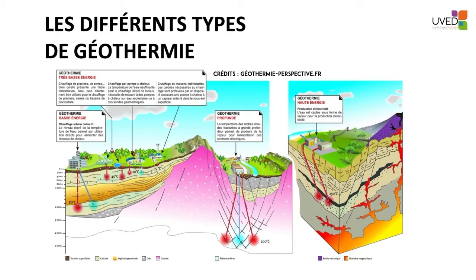The second category is low energy geothermal energy production, where heat is recovered without the use of an amplifier. The fluid must be at a temperature of approximately 80 degrees Celsius, and it can be used directly in heat networks.